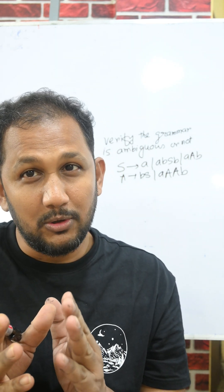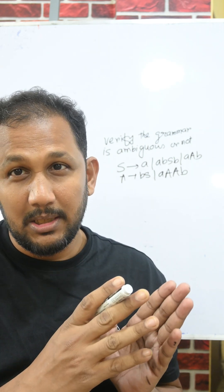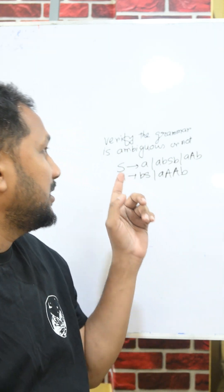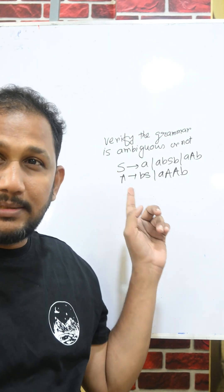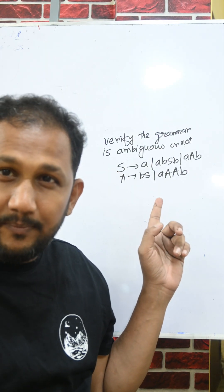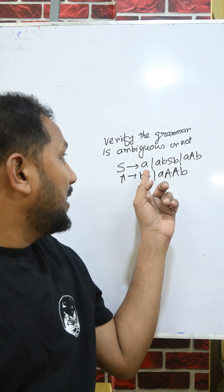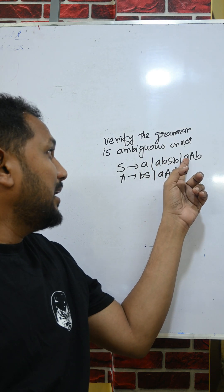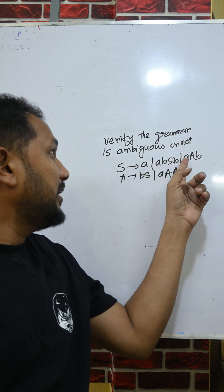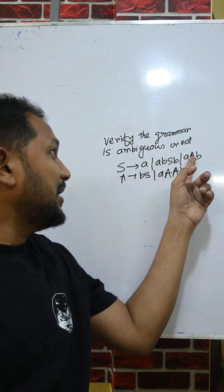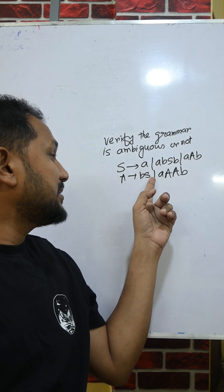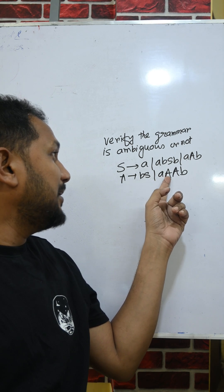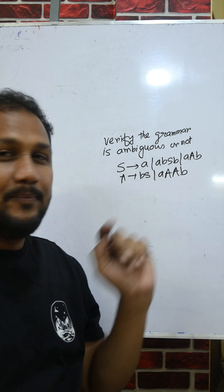That is, either from leftmost derivation or rightmost derivation for the given grammar. Now here the grammar is: S → aAbSbA, S → aA, bA, A → bS, A → aAB.